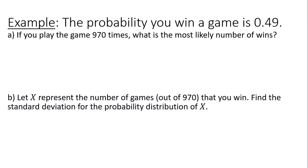If you play the game 970 times, what is the most likely number of wins? This is a binomial experiment because you have a fixed number of trials, the trials are independent, just because you win a game one time doesn't mean you're more likely to win it the next time or less likely to win it, and the probability of a success, the probability of winning, stays fixed.